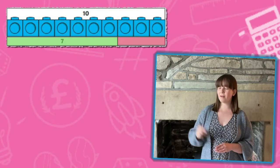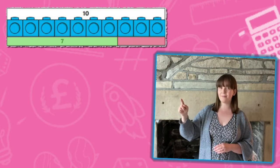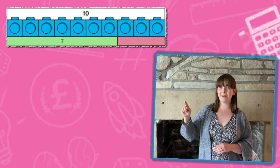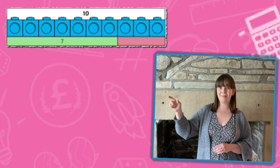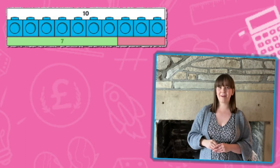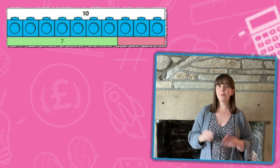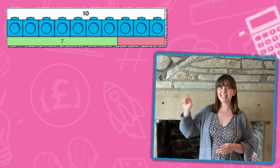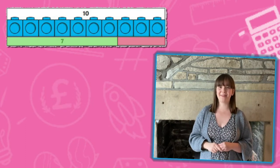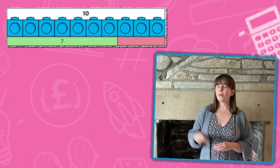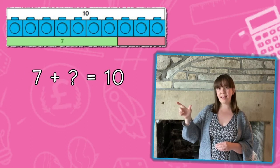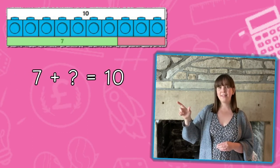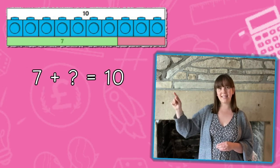This must mean that our first number, 7, is far greater than the second part of that bar. What children have to find out is that missing number — what goes with 7 to make 10?